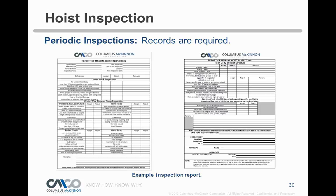This is a pre-operational inspection report where records are required. It's a detailed step-by-step checklist spelling out exactly what to look at. When I say 'written records,' this is the type of written report you would put on file — it covers everything we're going over in this training today.